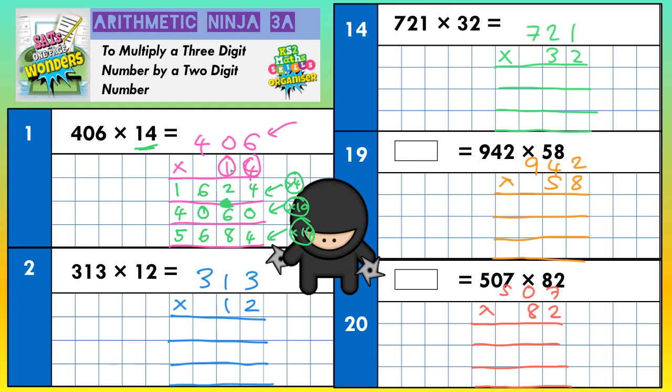Next question: 313 times 12. The top line will be for the 2, the second line for the 10, and the bottom line to add it all together. So 2 lots of 3, 2 lots of 1, and 2 lots of 3 on the top line, in that order. 2 threes are 6, 2 ones are 2, 2 threes are 6 — nice and easy so far.